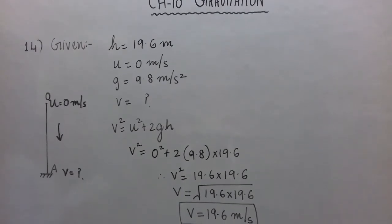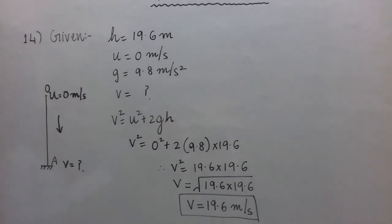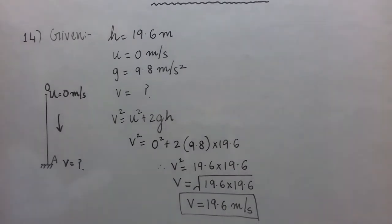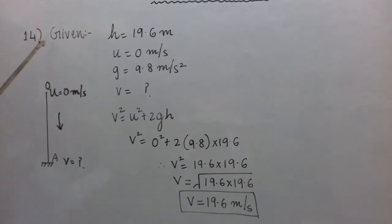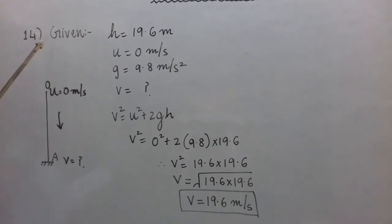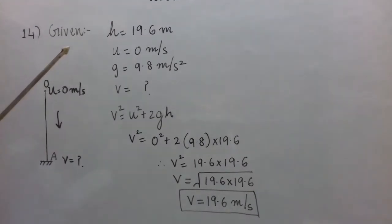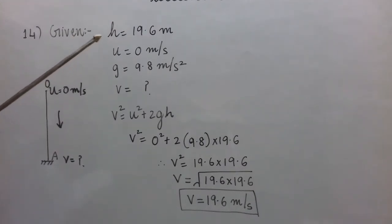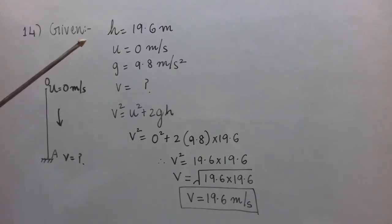A stone is released from the top of a tower of height 19.6 meters. Calculate its final velocity just before touching the ground. Height h is 19.6 meters.